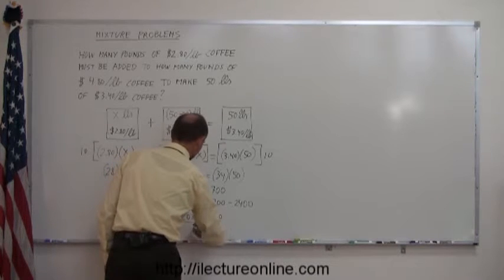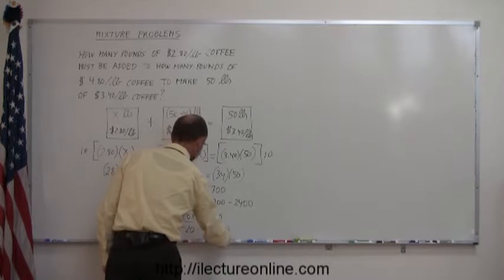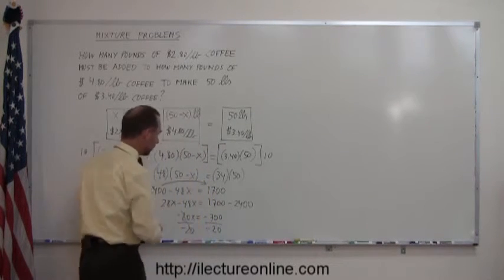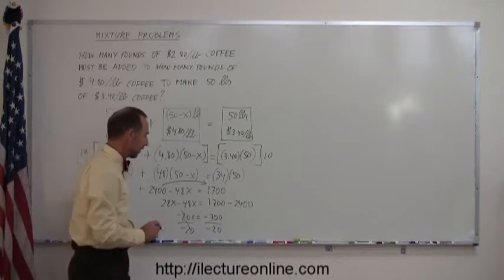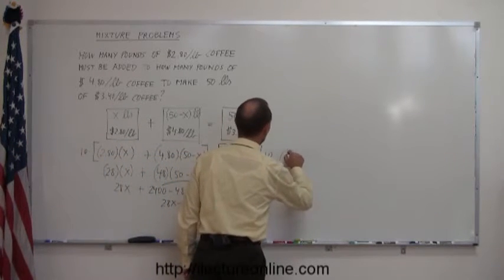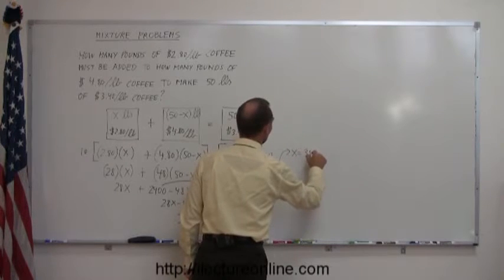Divide both sides by minus 20. Minus 20 cancels on the left side, and 20 goes into 700, 35 times. So we have X equals 35.